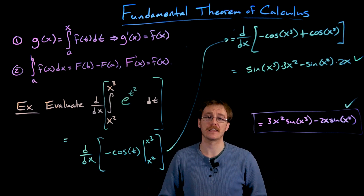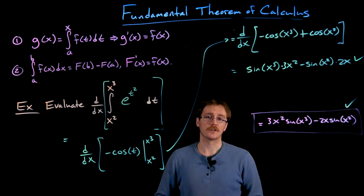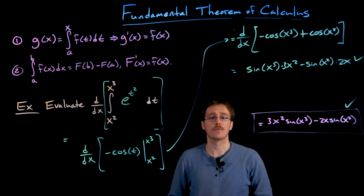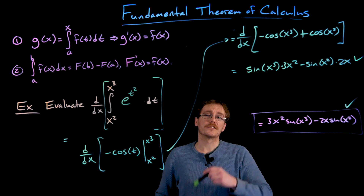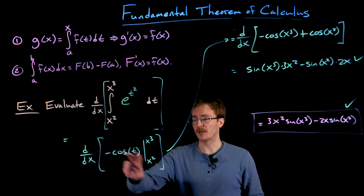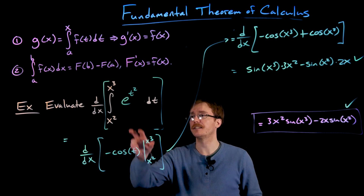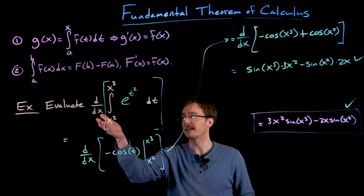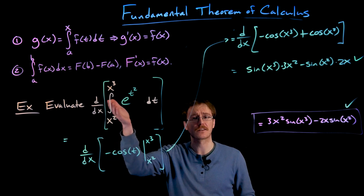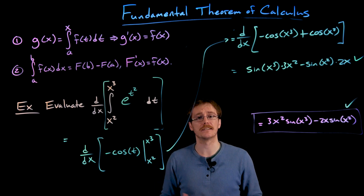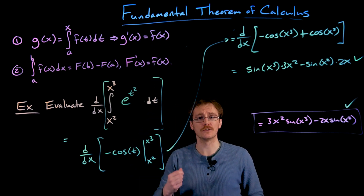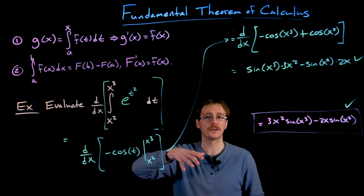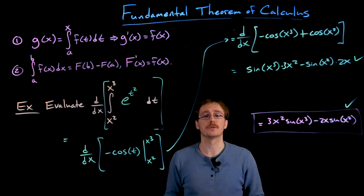An interesting fact is that there are actually far more functions out there that we can't find the antiderivative of than functions we can. We just don't usually focus on those because we can't use things like the fundamental theorem of calculus with them. One example of a function without a writable antiderivative is e to the t squared. So if we wanted to find the derivative with respect to x of the integral from x squared to x cubed of e to the t squared dt, we could only use the first approach with FTC part 1 — we could never write down an antiderivative formula for e to the t squared.